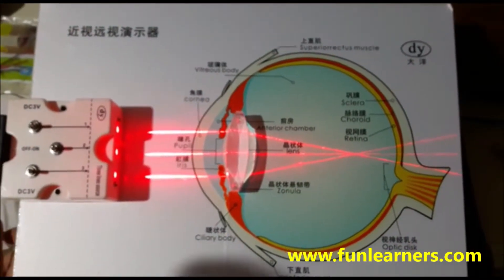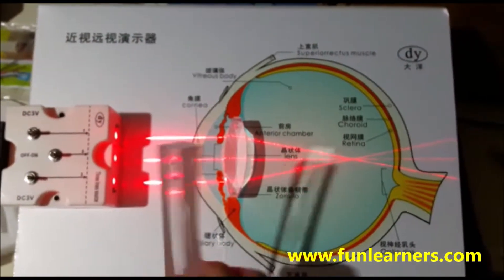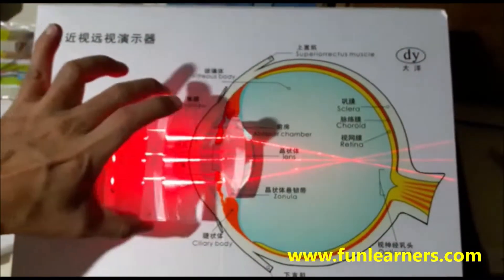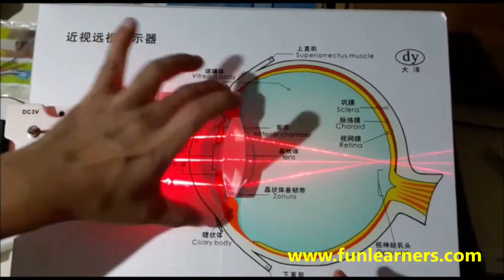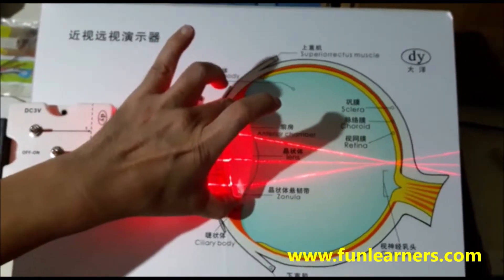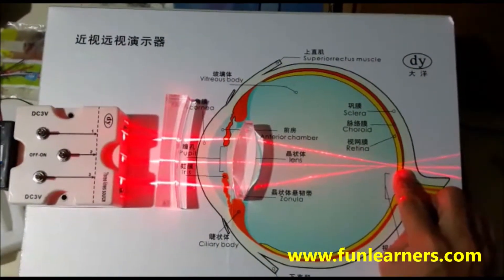So what we do, you will get a spectacle with a diverging lens. The spectacle will be somewhere here, then you'll convert the light ray back to this place where your retina is.